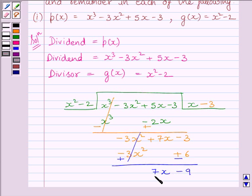Now, the degree of the remainder is less than the degree of the divisor. So, we will stop the division here. Clearly we can see, quotient is equal to x - 3 and remainder is equal to 7x - 9.